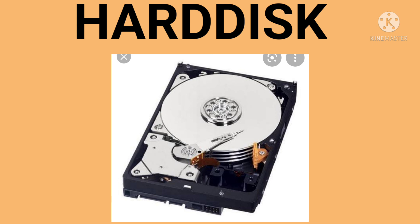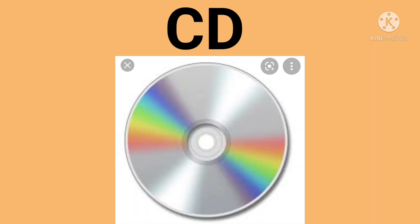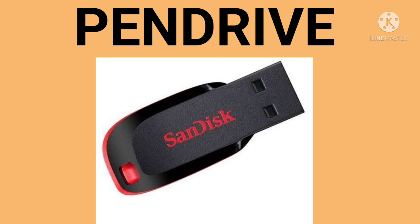Next one is CD. A CD or DVD is round in shape. It helps you to store a large amount of data, and a DVD stores more data than a CD. It is also used for listening to music and watching movies. Next is pen drive. A pen drive stores data that can be further copied to any other computer. A pen drive is small in size and easy to carry.